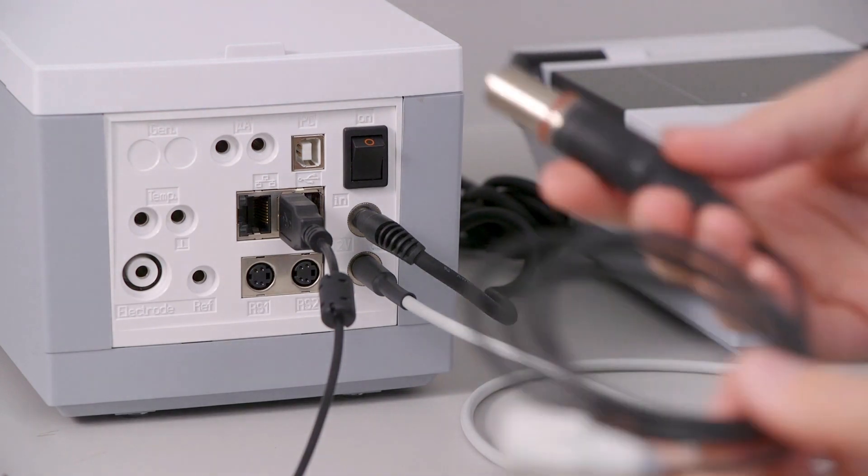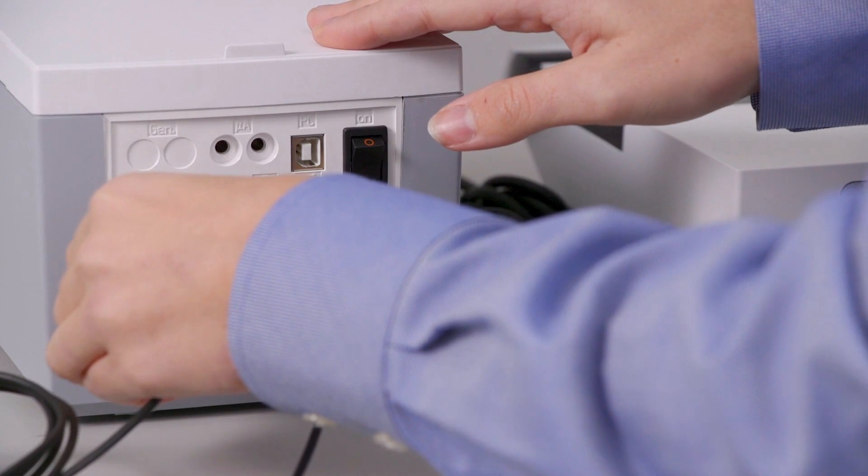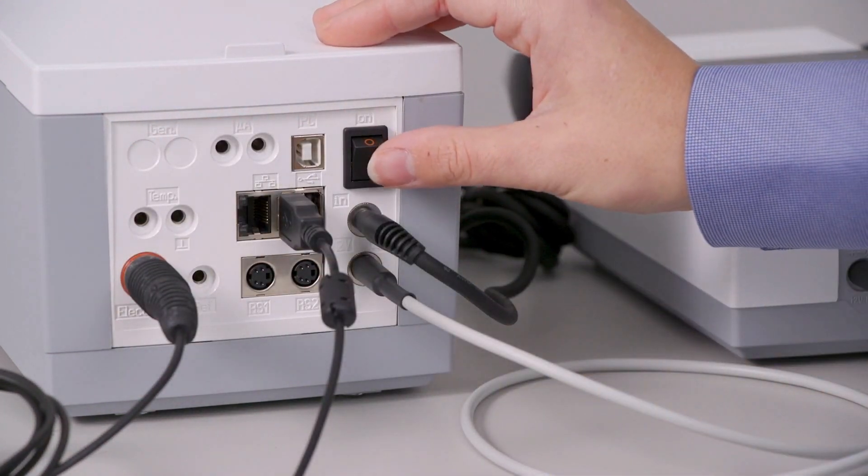The last thing to set up here is the electrode cable. So we'll just plug that into the DIN port on the bottom left hand side. Once that's done, you're ready to turn it on.